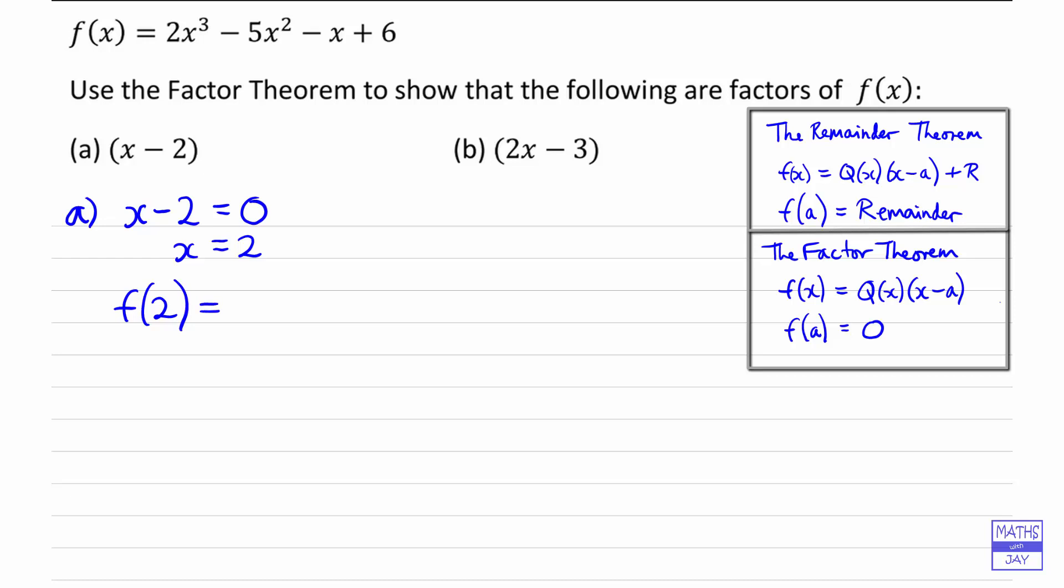So we're simply replacing each occurrence of x by two. We've got minus 5x squared, so minus 5 times 2 squared, minus x, that's minus 2, plus 6. Working that out, 2 to the power of 4 is 16, 5 times 4 is 20, and minus 2 plus 6.